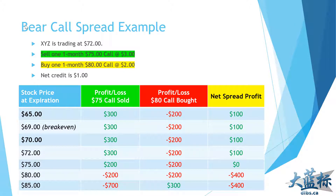Looking at the table: from the call sold at $75, maximum income is $300. If the price rises above $75, I take losses — but they're offset by the $80 call I purchased for $2 ($200 maximum loss). If the stock rises above $80, I actually start making money on the call I bought. Taking the two together: as long as the price stays below $75, I make a profit of $100, but if the stock continues to rise my maximum exposure is $400.